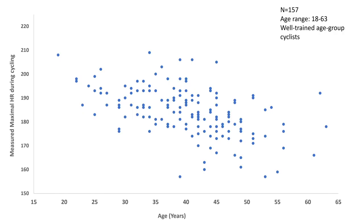Here is some real data that I have collected over several years — actually a combination of three different studies. Two training studies on well-trained cyclists, plus a third study completed in a crowdsourced manner where people completed four-hour rides, two-hour rides, and so forth. The bottom line is, on all 157 of these cyclists aged 18 to 63, mostly men but some females, we have good data on their actual maximum heart rate and we know their age.